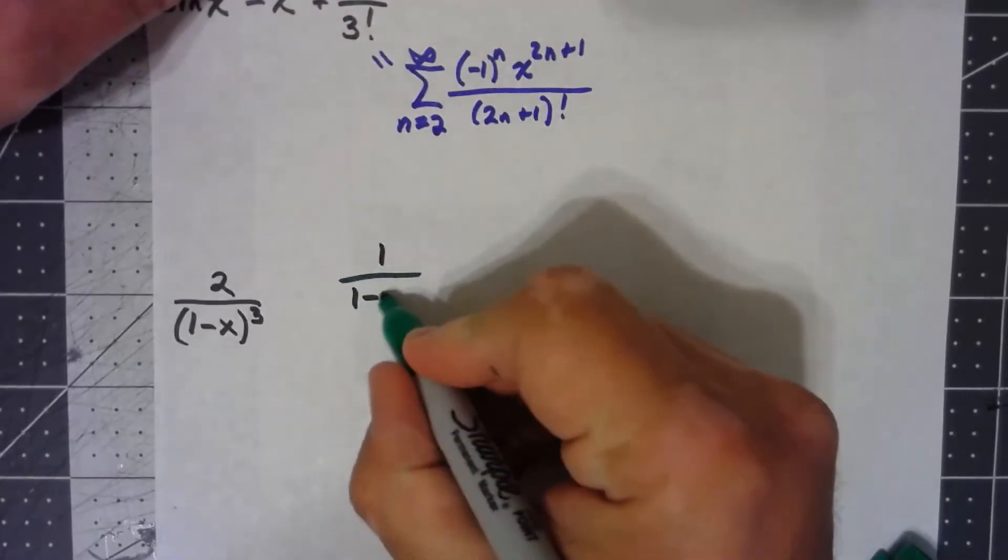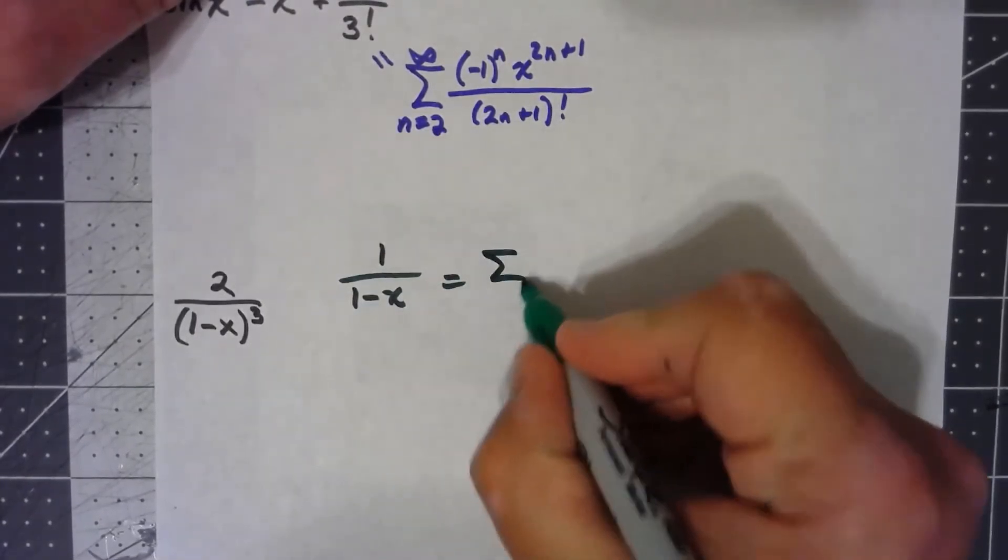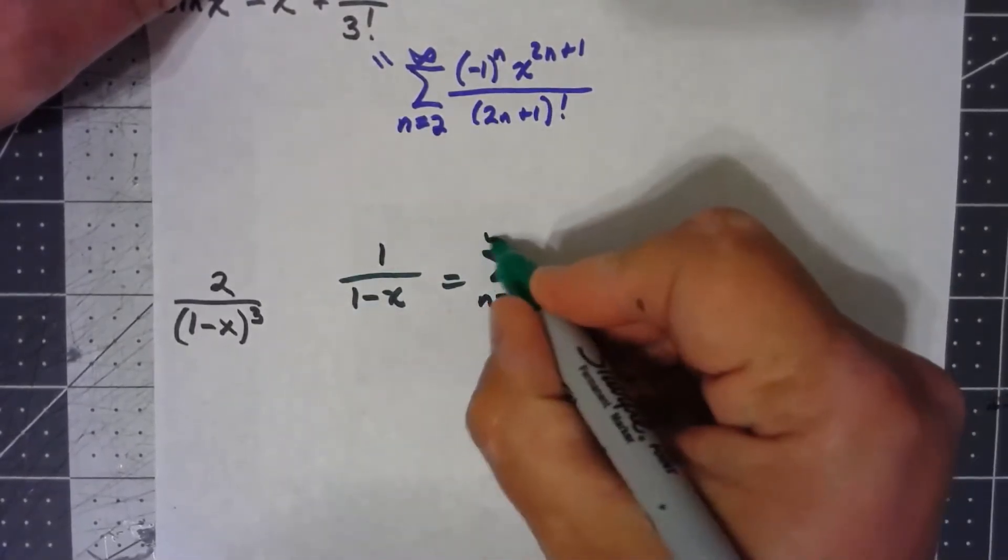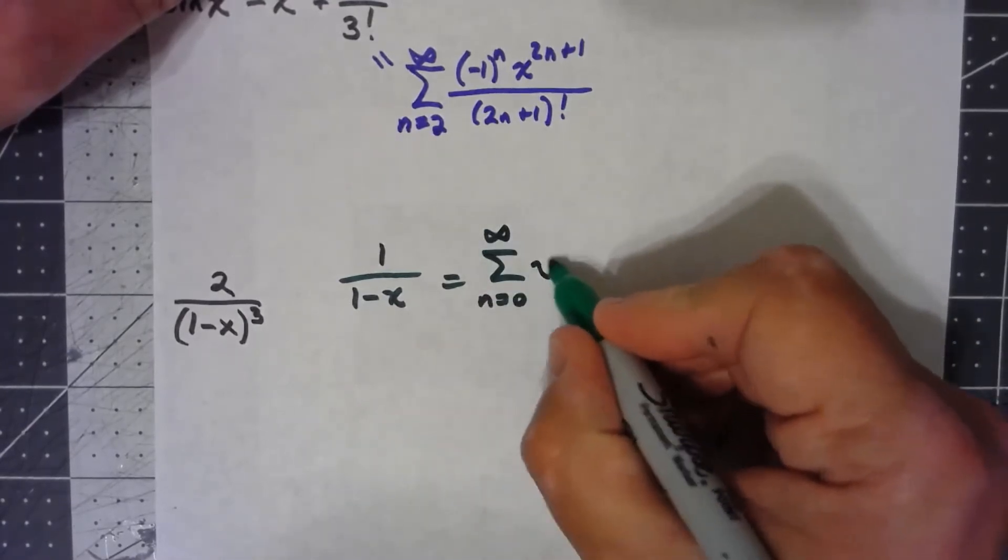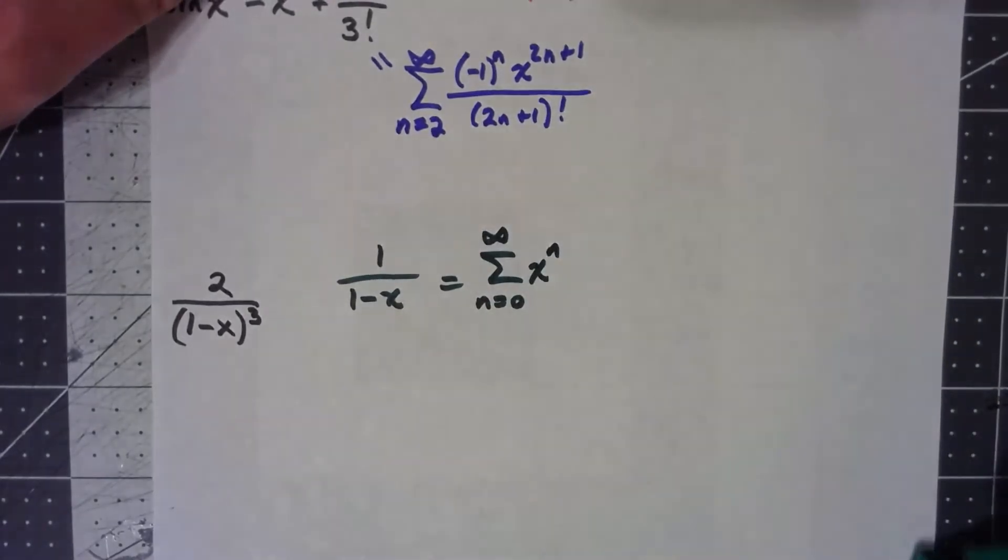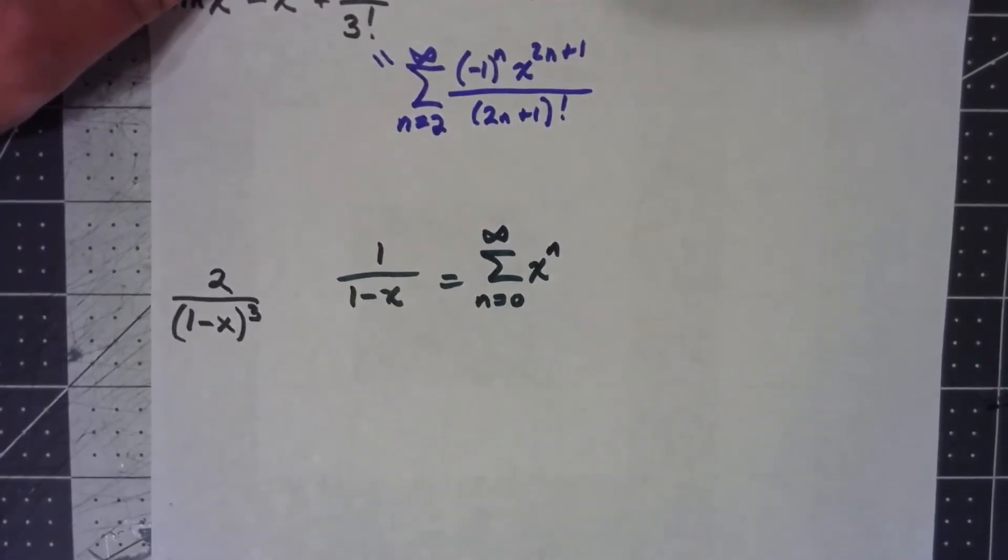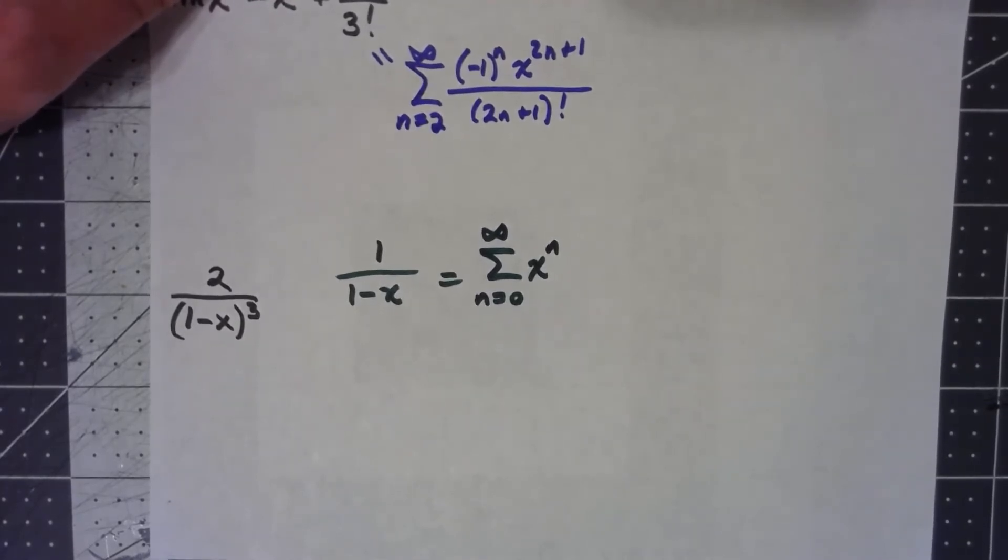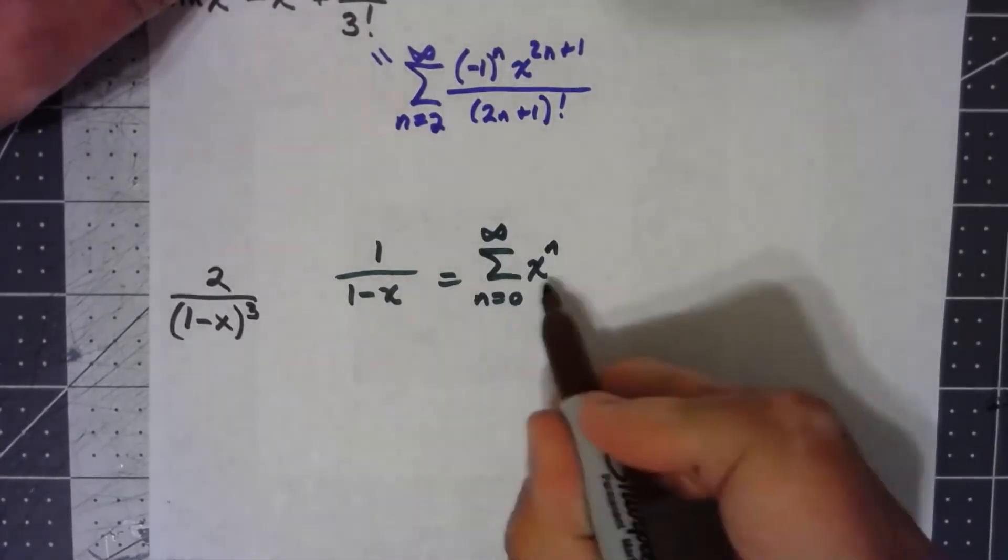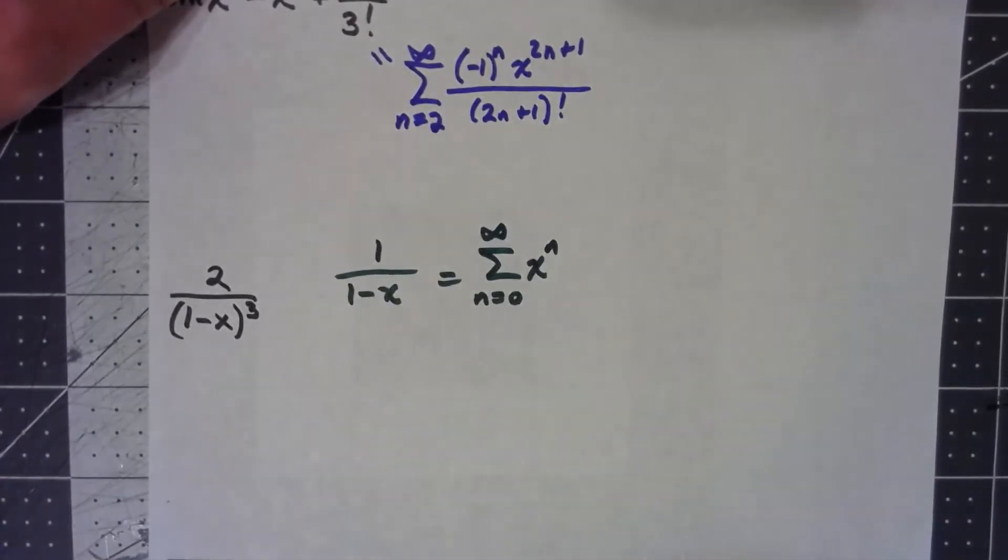We've got 1 over 1 minus x is the sum from n equals 0 to infinity of x to the n. Well, I kind of did this a couple of videos back when we were talking about sines and cosines. Let's go ahead and let's take the derivative of both sides here.